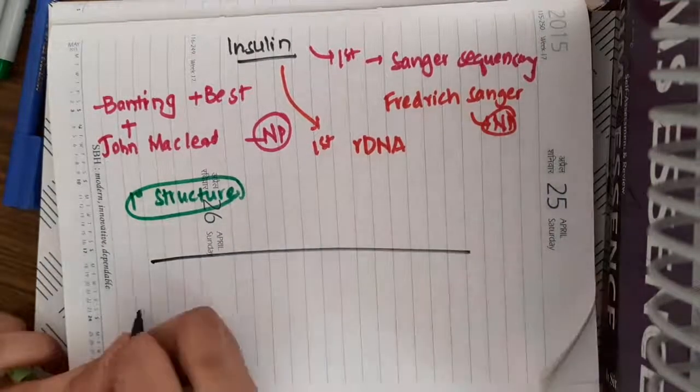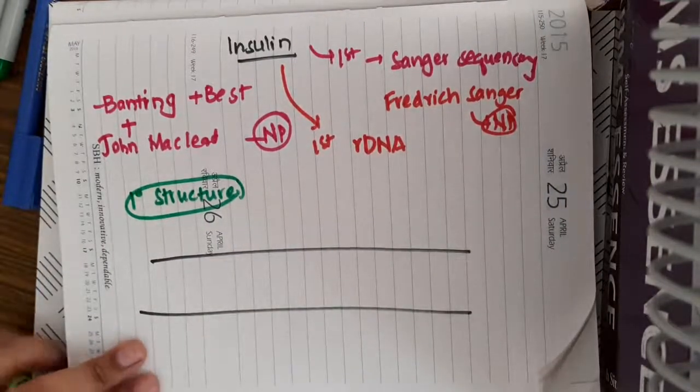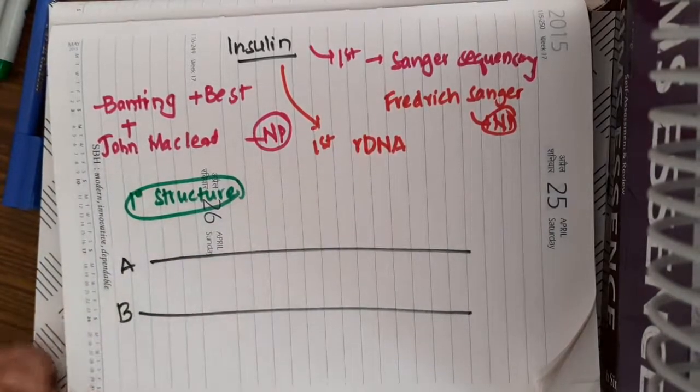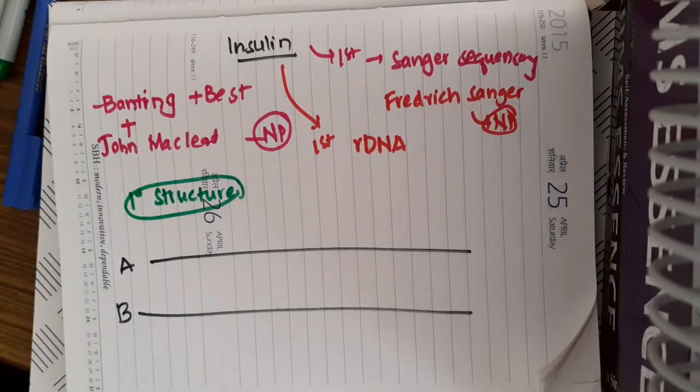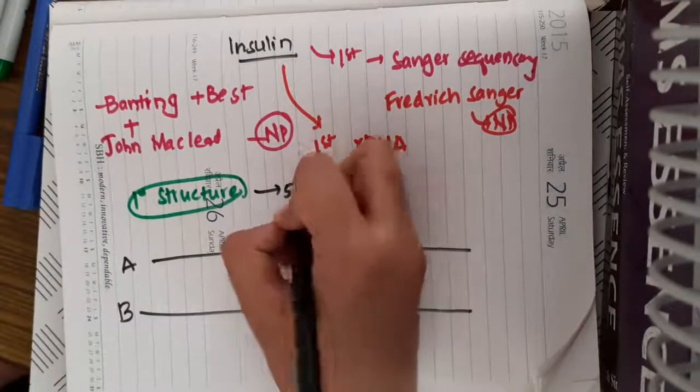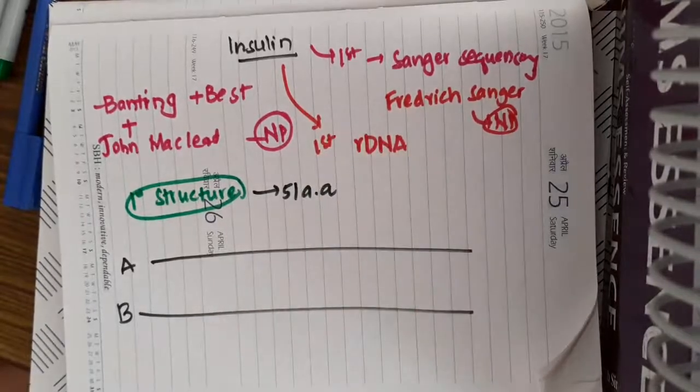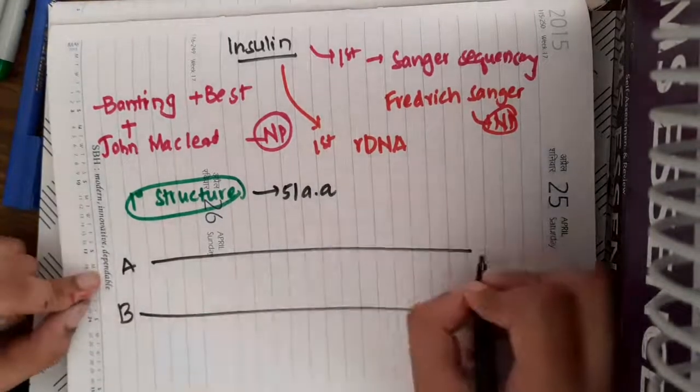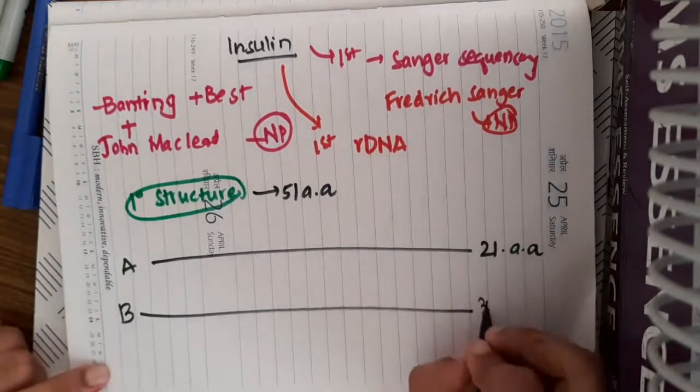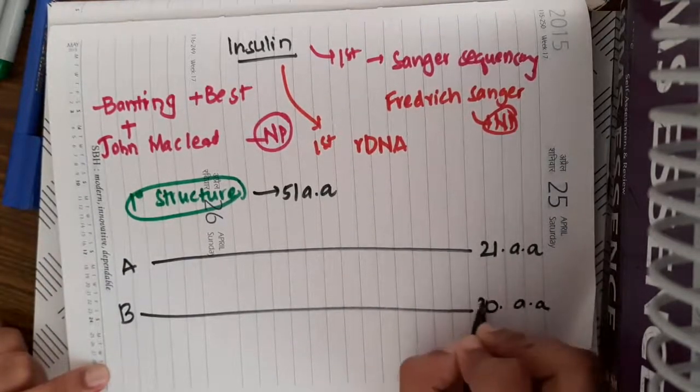In the primary structure of protein insulin, it has two peptide chains. The first peptide chain is A, the second peptide chain is called B. These peptide chains totally contain 51 amino acids. The A chain contains 21 amino acids, whereas the B chain contains 30 amino acids.